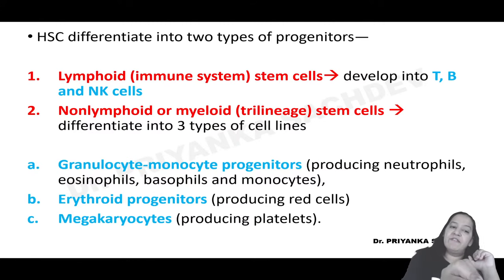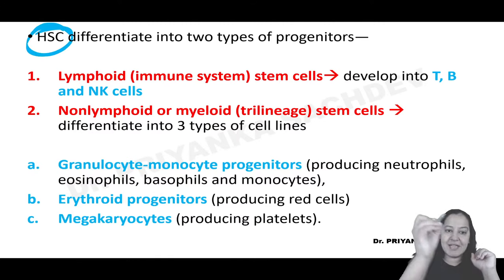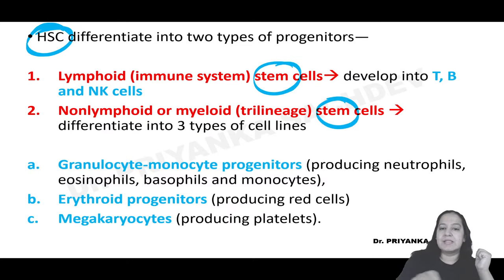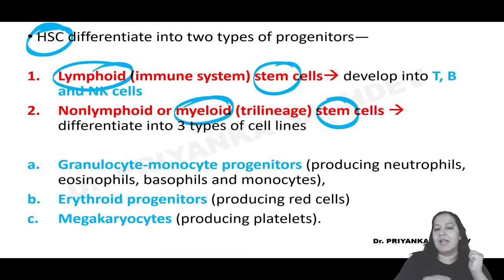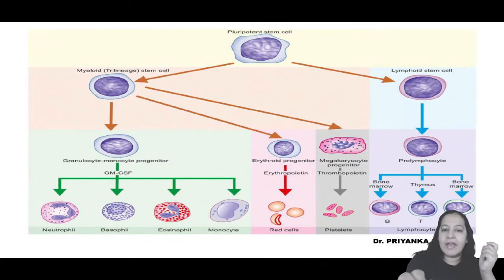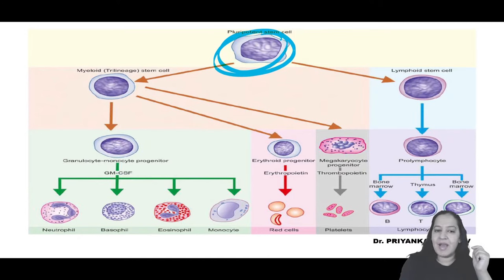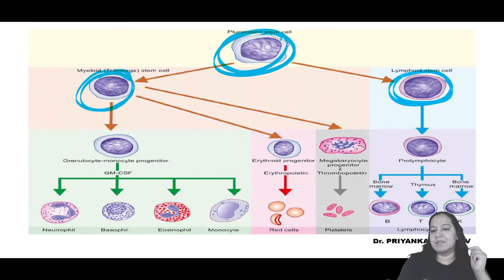In hematopoiesis, hematopoietic stem cell differentiates into two types: lymphoid stem cell and myeloid stem cell. You can see this is the hematopoietic stem cell, and from it either myeloid stem cell or lymphoid stem cell is formed. In the blood we have RBCs, platelets, and five types of WBCs: neutrophil, eosinophil, basophil - these are granulocytes - and monocyte and lymphocyte - these are non-granulocytes.